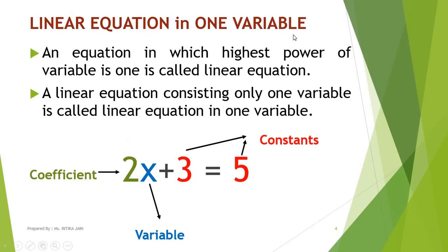Now, linear equation in one variable. I have already explained 'equation'. The term 'linear' is added in front of equation, and 'one' is added in front of variable. A linear equation is one in which the highest power of the variable is 1. And a linear equation consisting of only one variable is called a linear equation in one variable. For example, 2x plus 3 equals 5 — here x is the variable, and its power is 1.